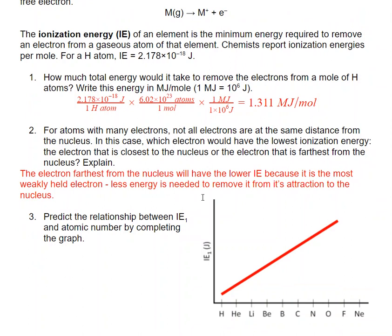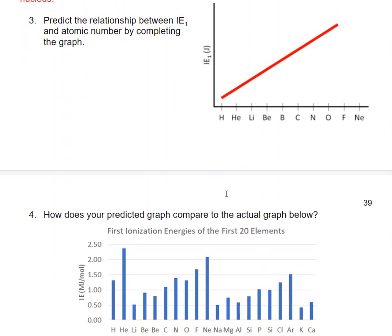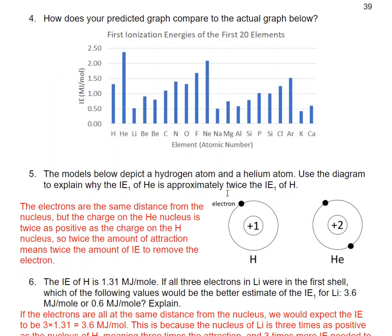To predict the trend in ionization energy, I've got atomic number versus ionization energy. Most people would assume that as the core charge of the nucleus goes from +1 to +2 to +3, ionization energy would increase because the nucleus is becoming more positive. But this doesn't match experimental observations. What we actually see is an increasing trend and then it drops, increasing trend and then it drops. Each of those drops corresponds to a new row on the periodic table.